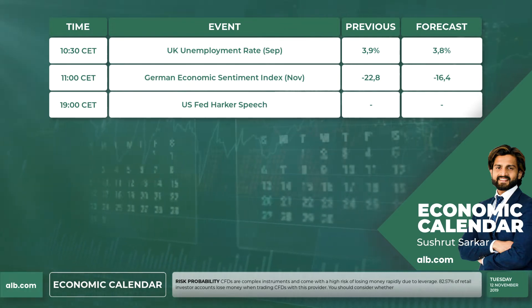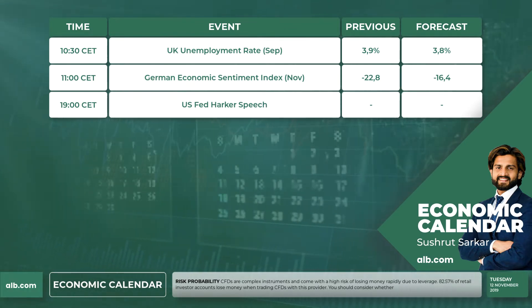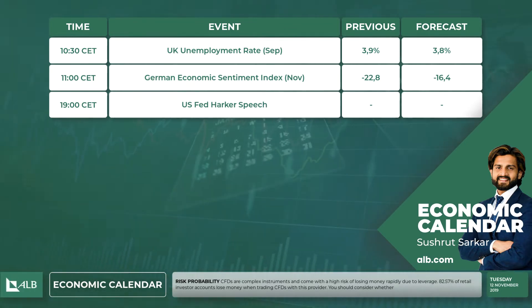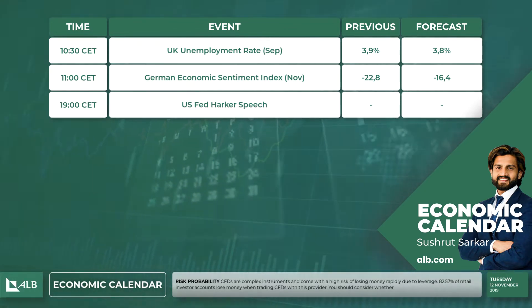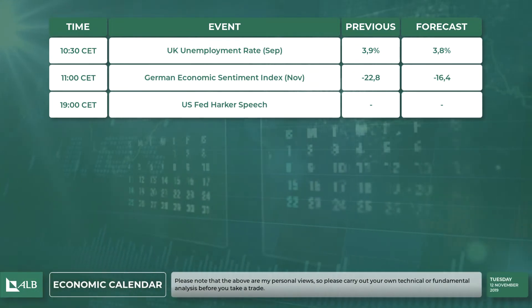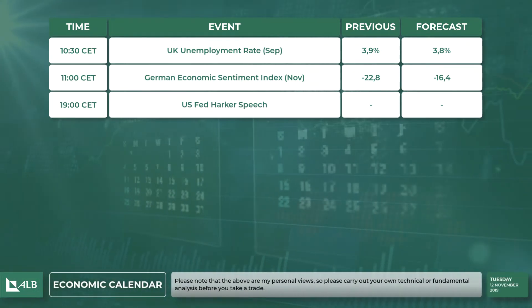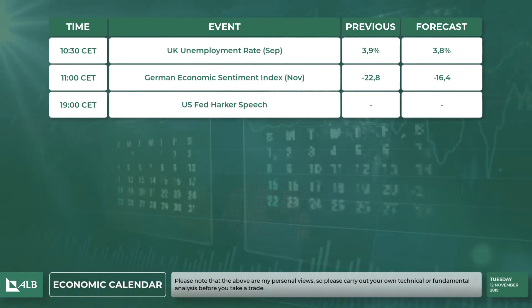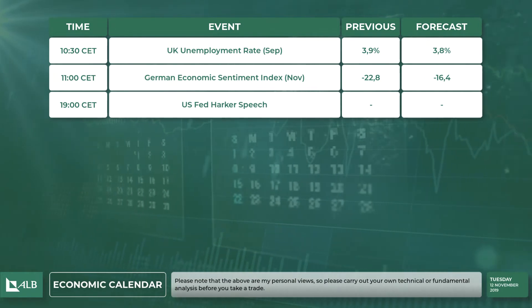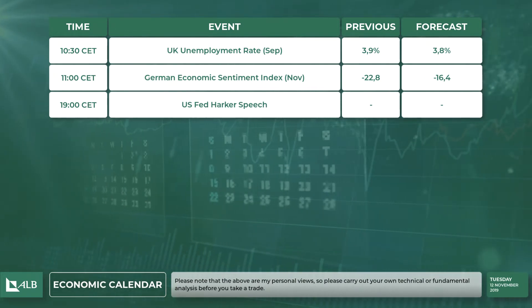In the morning at 10:30 a.m. we have the UK unemployment rate for the month of September, which previously came at 3.9% with the forecast at 3.8%. At 11 in the morning we have the German ZEW economic sentiment index for the month of November.